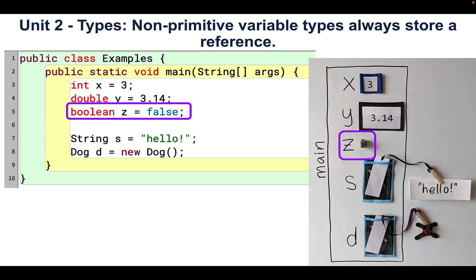z is a variable of type boolean, which means it stores either a true or a false, and we represent it as a switch because on and off are like true and false, and z stores the value false.